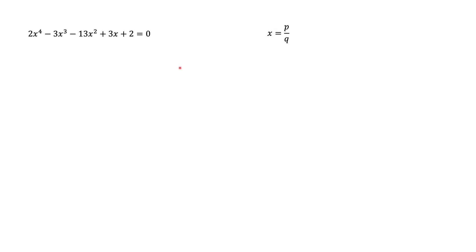It turns out that P has to be a divisor of the constant term in this polynomial — in this case, a factor of 2. And Q is going to be a divisor of the coefficient in front of the highest power, which is the coefficient in front of x to the fourth power, and that's also going to be 2. So both P and Q are divisors of 2. There are 4 divisors of 2: plus or minus 1 and plus or minus 2. Looking at all possible combinations, there are actually only 6 possibilities for the root to be a rational number: plus or minus one half, plus or minus 1, or plus or minus 2.